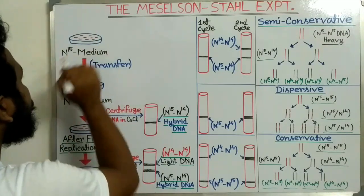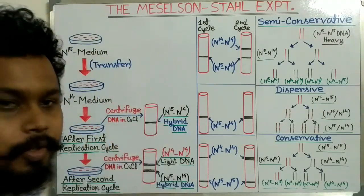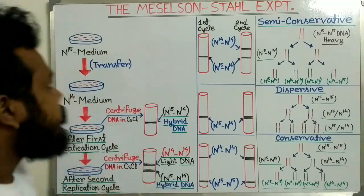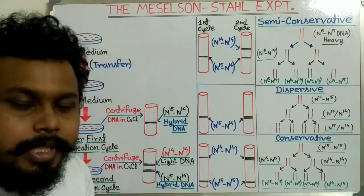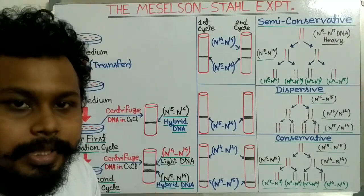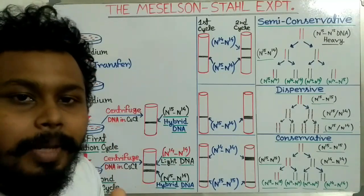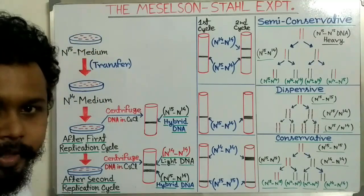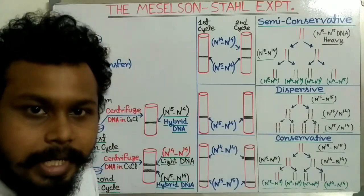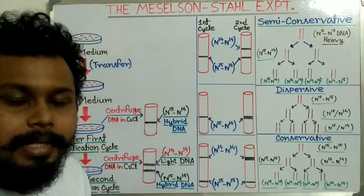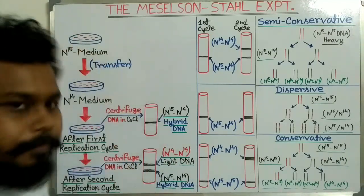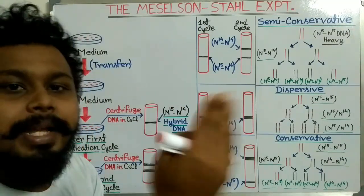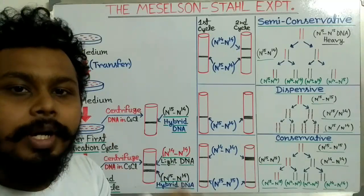At first, the E. coli bacterial cells were grown in a medium containing nitrogen-15, which is the heavy nitrogen source. This medium contained nitrogen as the heavy isotope N15, whereas the normal nitrogen is N14. After many generations, those bacteria took up N15 and incorporated it to make their new DNA strands.